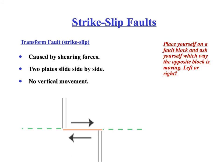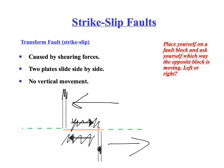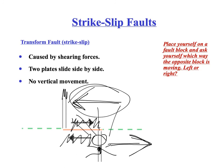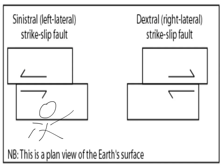Strike-slip faults are essentially transform faults, which form at transform plate boundaries, caused by shear forces from two plates or two rock bodies sliding past each other. In this particular diagram, there is a mistake — the sedimentary layer should line up, but it doesn't, telling me that one plate went one way and the other plate went the other way. This block went to the left and this one went to the right. If I were to stand here and look over the fault, the other block is going to the left — so this is a left lateral strike-slip fault. Conversely, if I'm on the other block and look across, that block is moving to the right, making it a right lateral strike-slip fault.